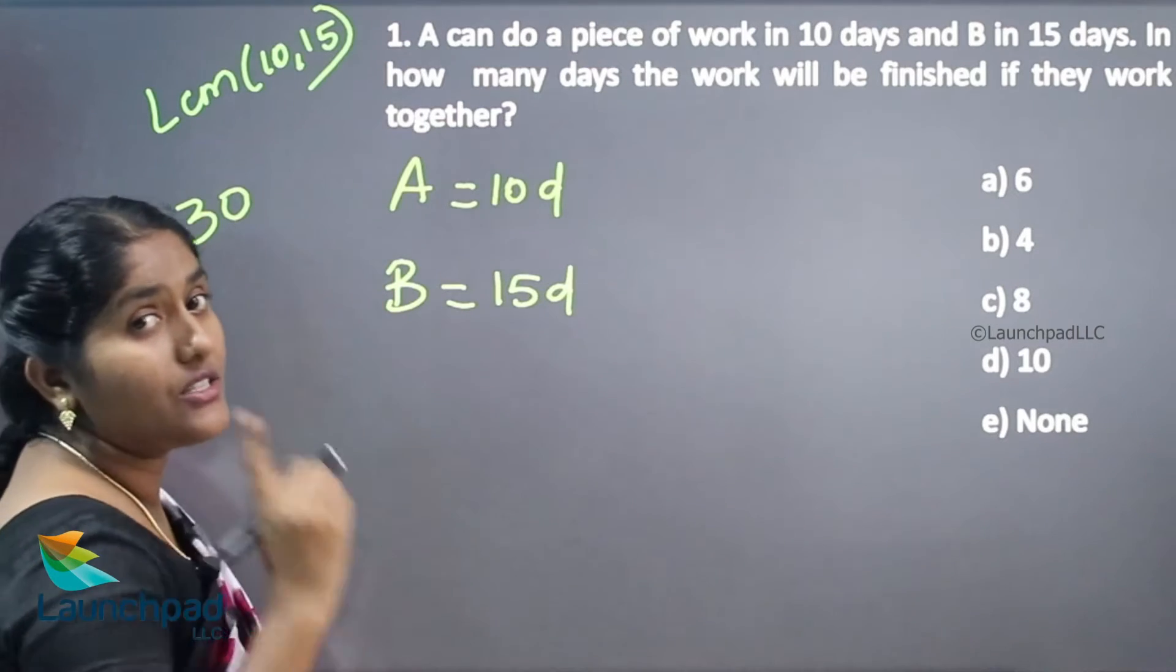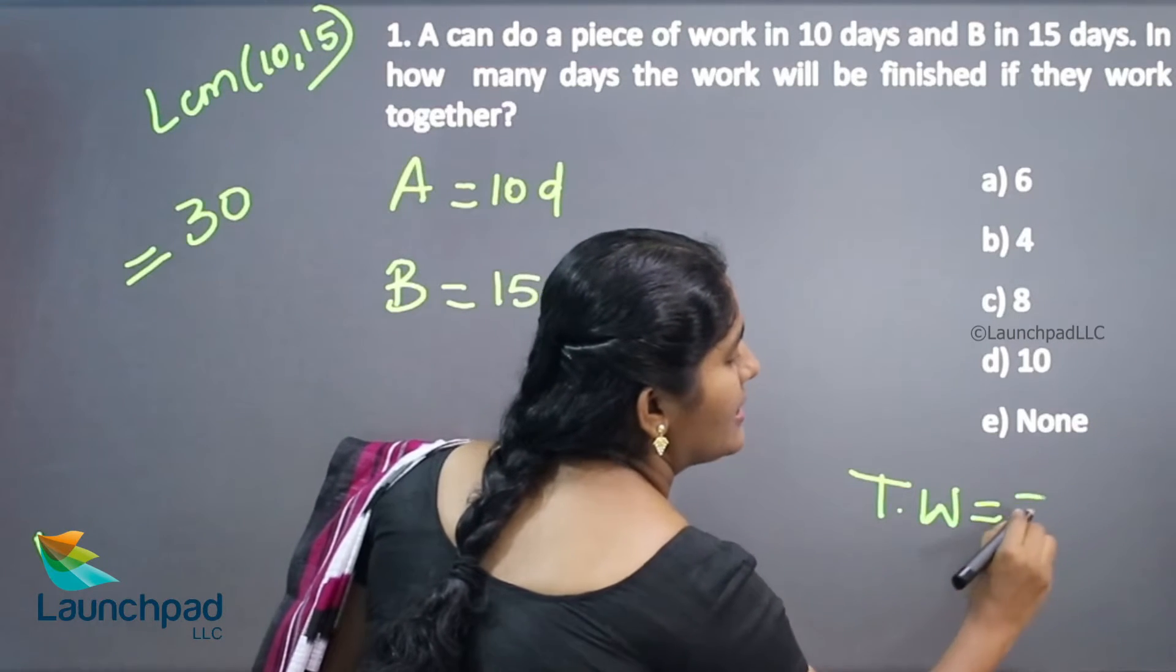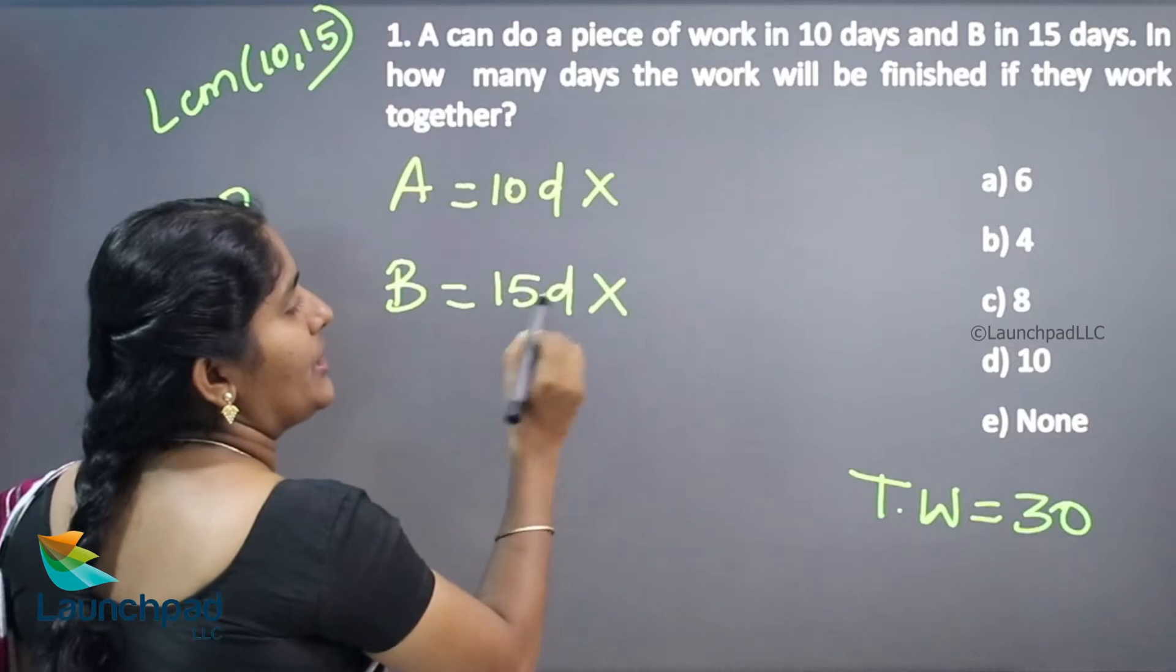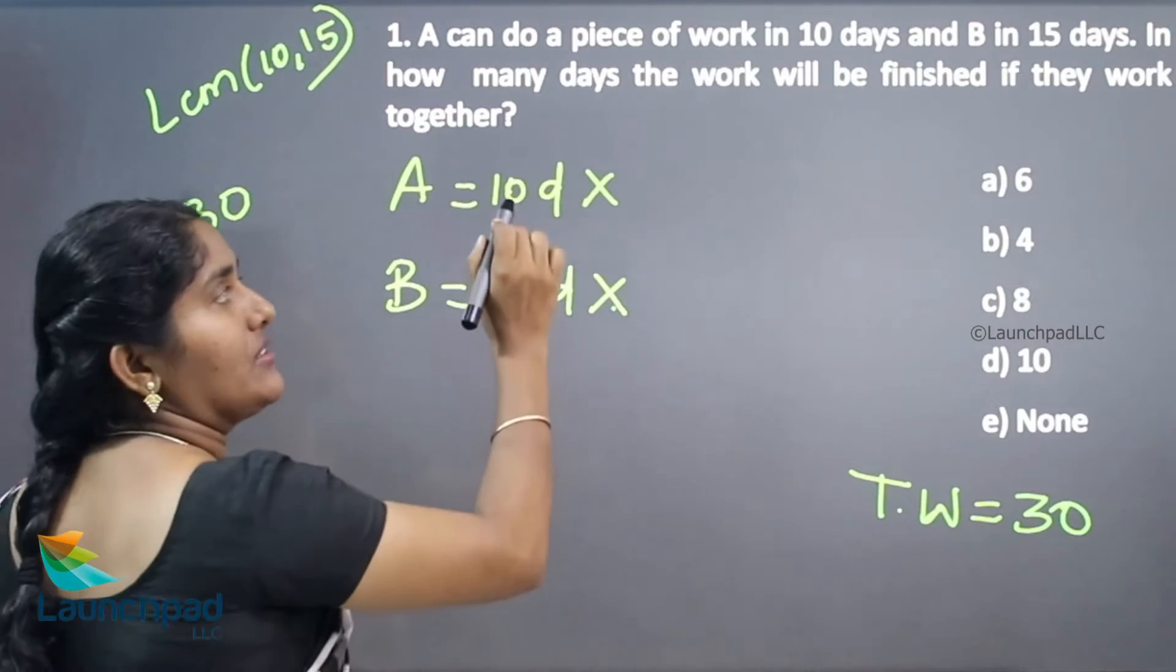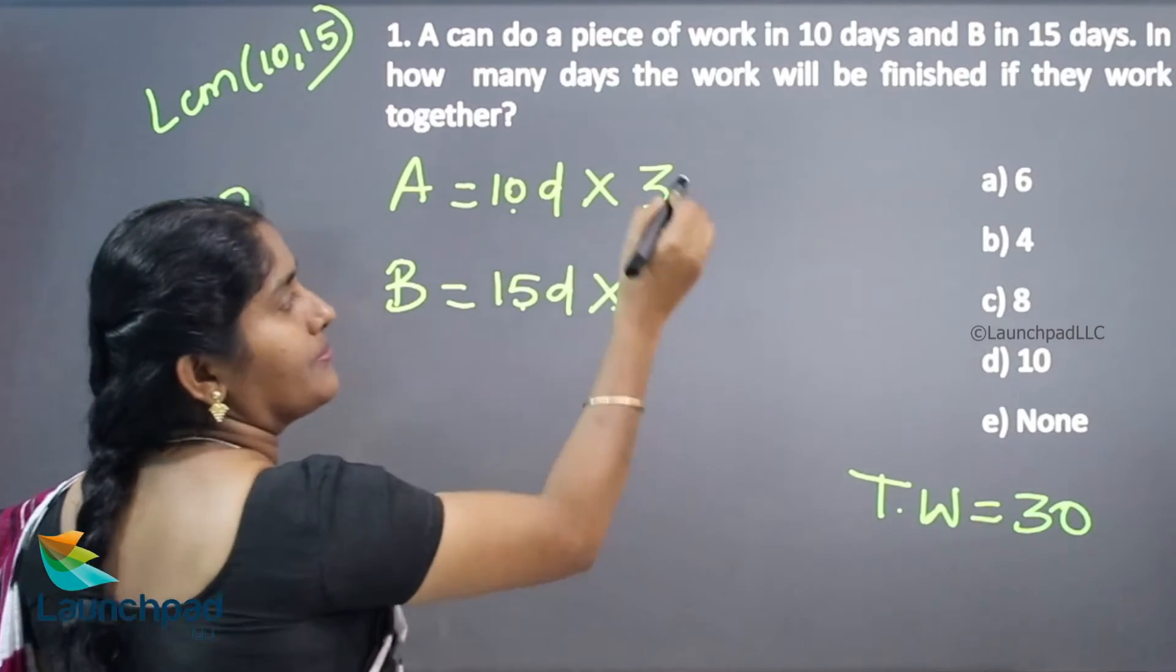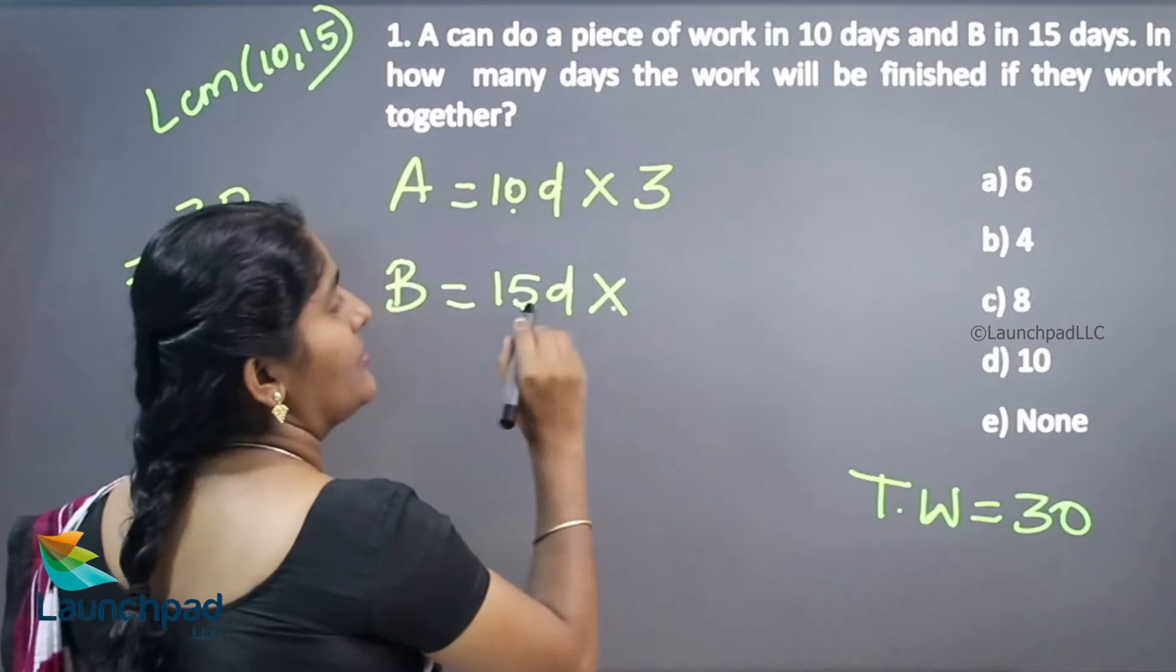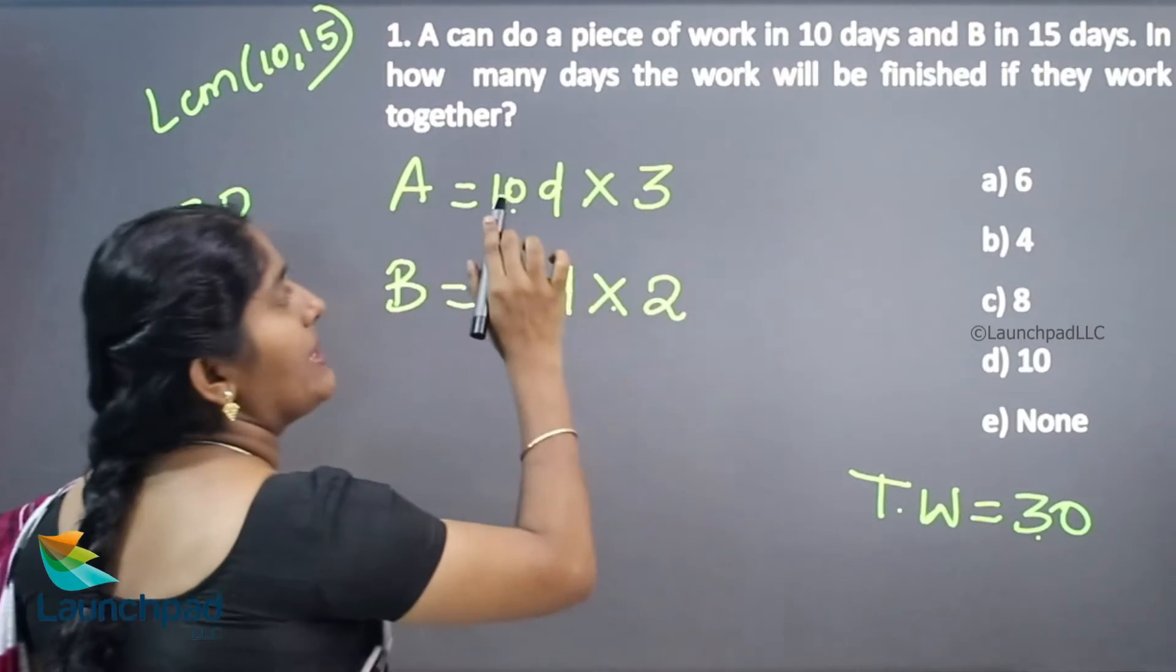This 30 is your total work. You can consider this 30 as your total work. Now, which number are you multiplying with 10 so the result will be 30? That is 3. Which number are you going to multiply with 15 so the resultant will be 30? 15 into 2, or 30 divided by 10 is 3.